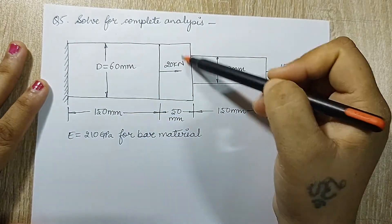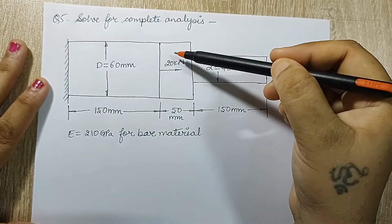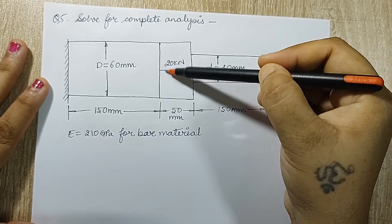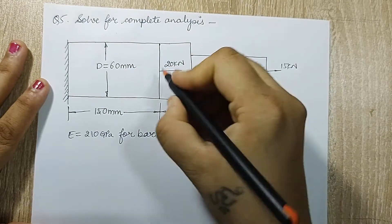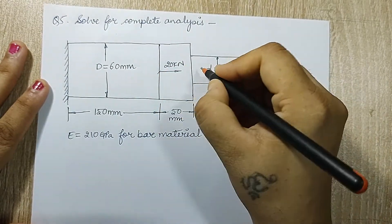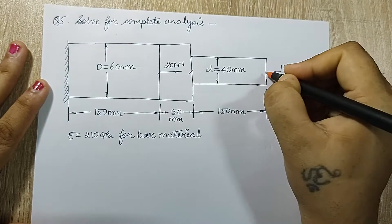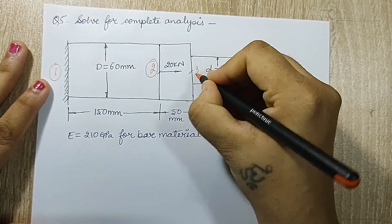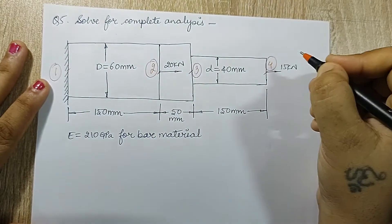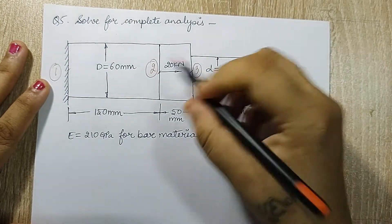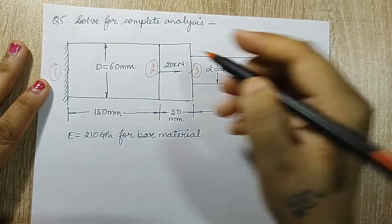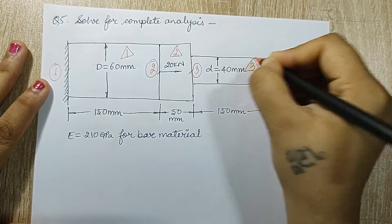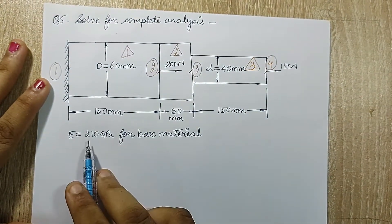I will start with marking of the elements. You can see over here this is one element, but I will consider this as 2 because I am supposed to consider a node at this point, as there is a sudden loading at this point. So there is a node here, obviously a node here, and these are the two endpoints — so two nodes. One, two, three, four. This is my first element, second element, and third element.